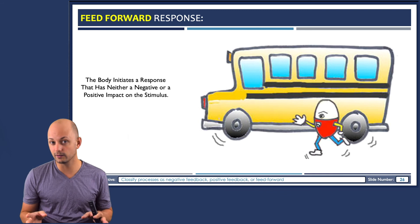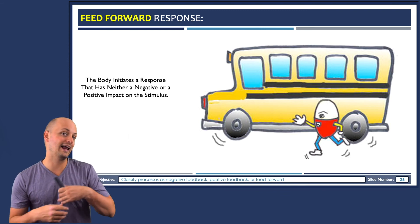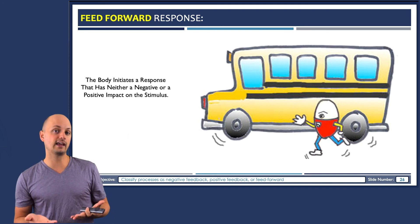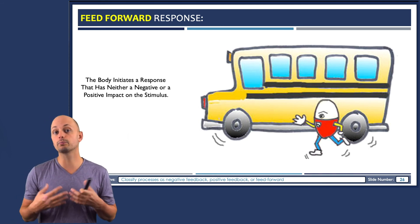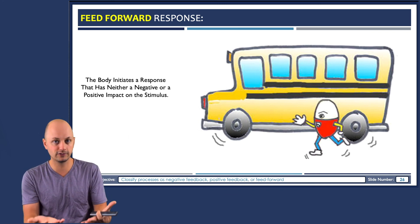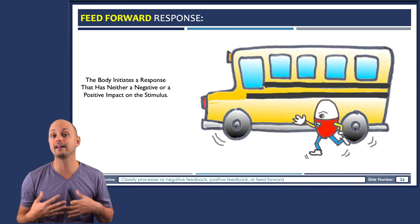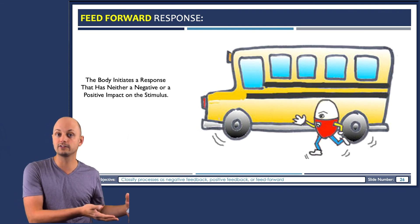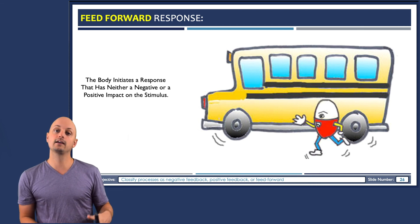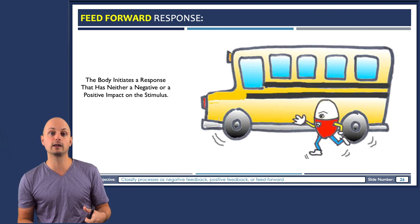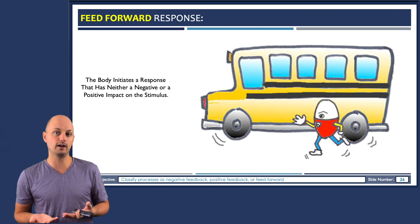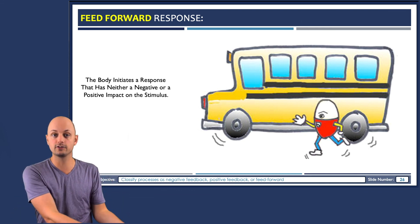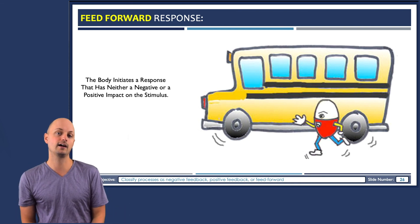Feed-forward mechanisms are interesting. Sometimes they happen without any particular rhyme or reason, but in other cases, like the example just given, they are intended to be a preemptive response that helps you prepare for some situation you're anticipating. So for example, your heart beating faster pumps more blood out to your tissues, and your respiration rate increasing brings more oxygen into your body — both of which are going to be necessary if you're going to chase after the bus and catch it so that you can make it to class on time.